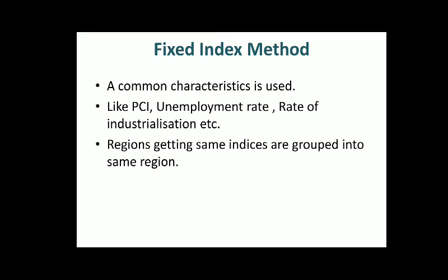Next is the fixed index method. In the fixed index method, we use common characteristics such as per capita income, unemployment rate, or rate of industrialization. For each index we give a particular weightage or rank — first PCI, second unemployment, third rate of industrialization. If the weighted mean scores for two regions are the same, both regions are said to be the same region; if different, they are called different regions.